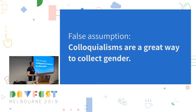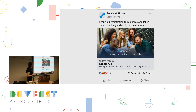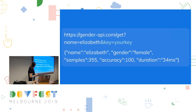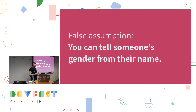I'm going to finish up by showing you one example which I think perfectly exemplifies a lot of these bad assumptions rolled into one glorious product. A while ago, I was on Facebook scrolling through, and this appeared in my feed: Gender API — 'Keep your registration form simple and let us determine the gender of your customers.' So you give them a name, and you get back a gender. That's actually an assumption we hadn't covered yet — the assumption that you can tell someone's gender from their name. You can't. For starters, there are many names out there that are very evenly split and gender-neutral. Secondly, there are always people who will defy the trend — names that are predominantly male or female, but some people do take them. So it's never going to be a good way to do this.